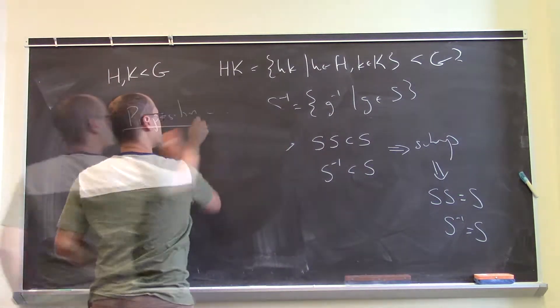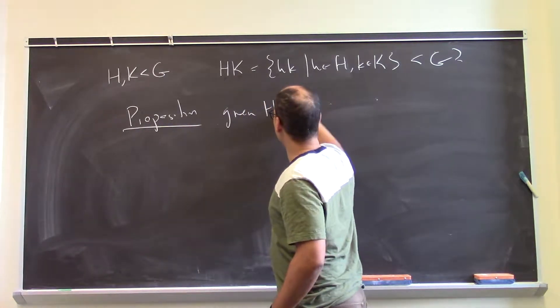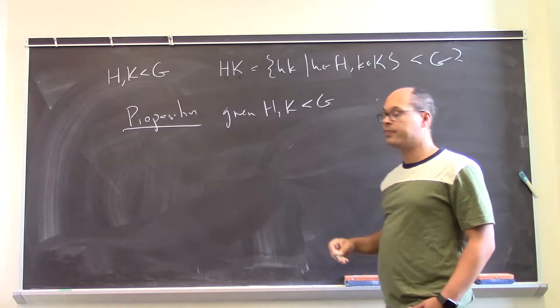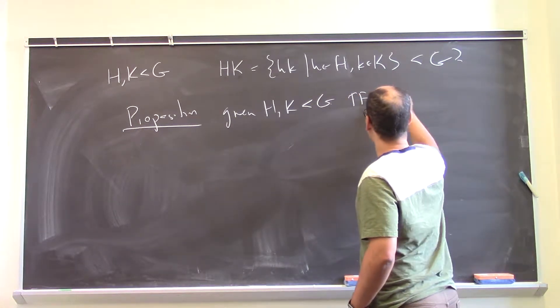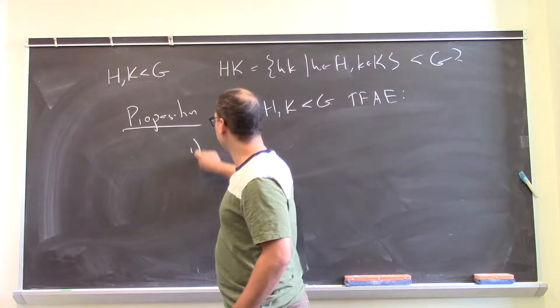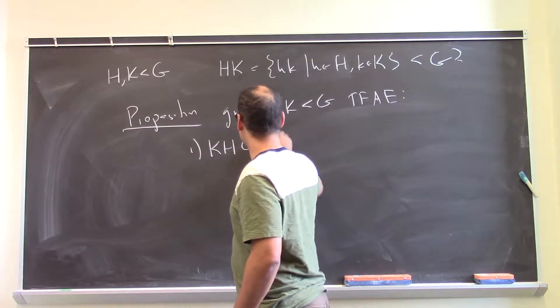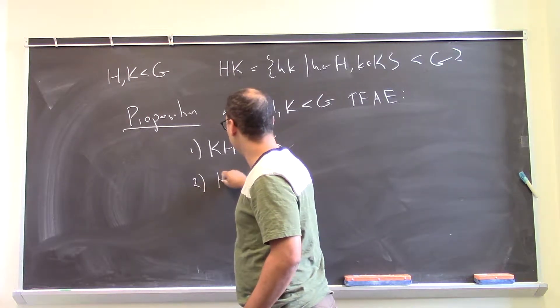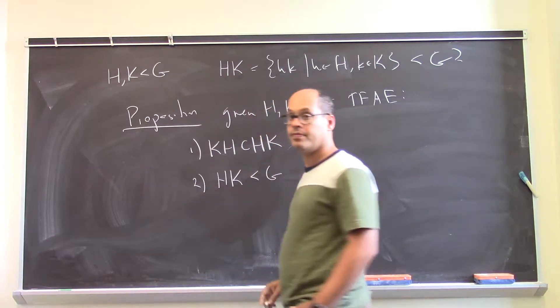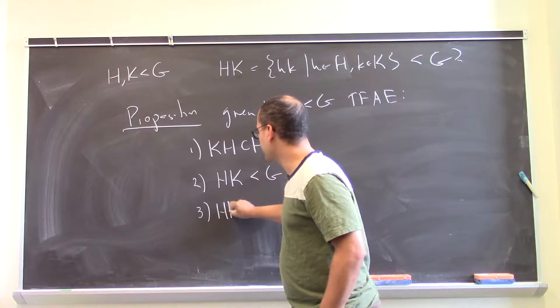And now let's state the result. So given H and K as above, subgroups of a group, the following are equivalent. Number one, KH sits inside of HK. Number two, HK is a subgroup. And number three, HK equals KH.